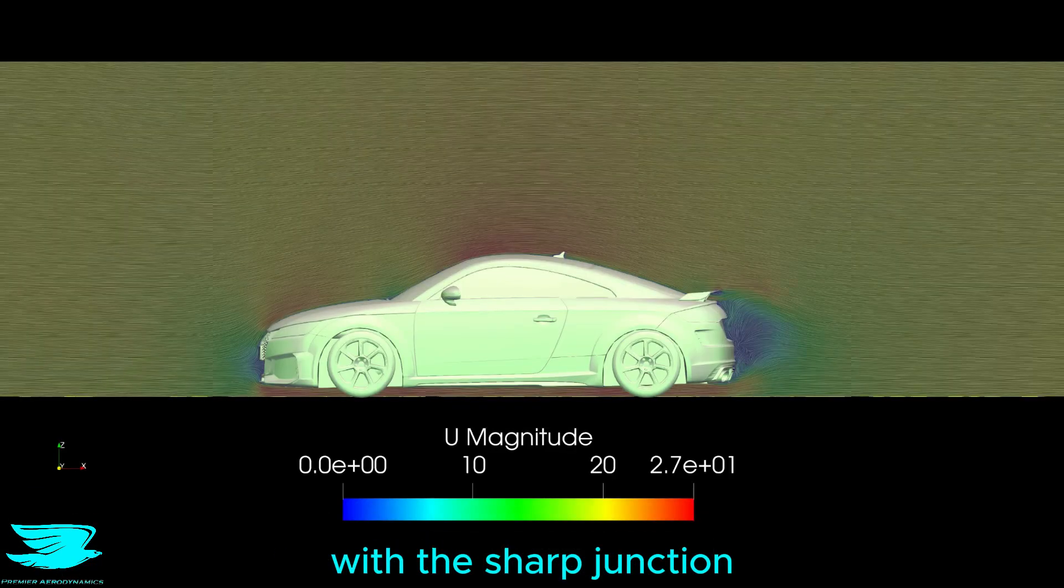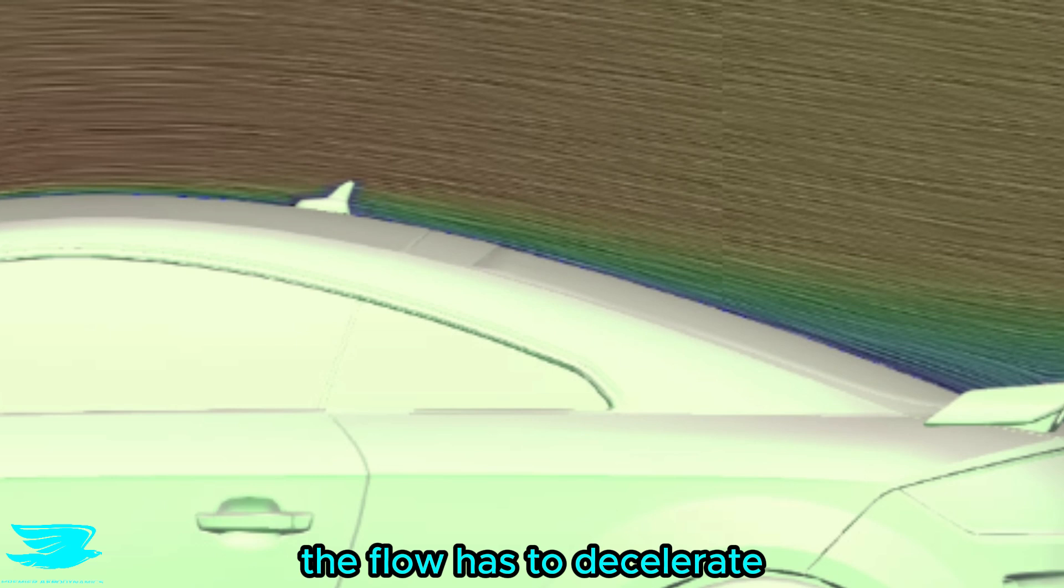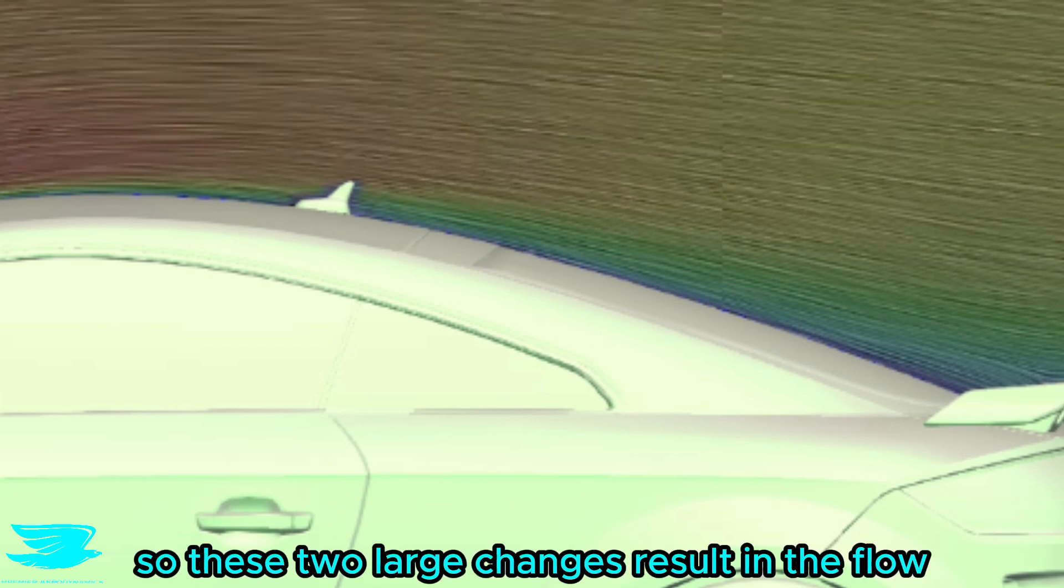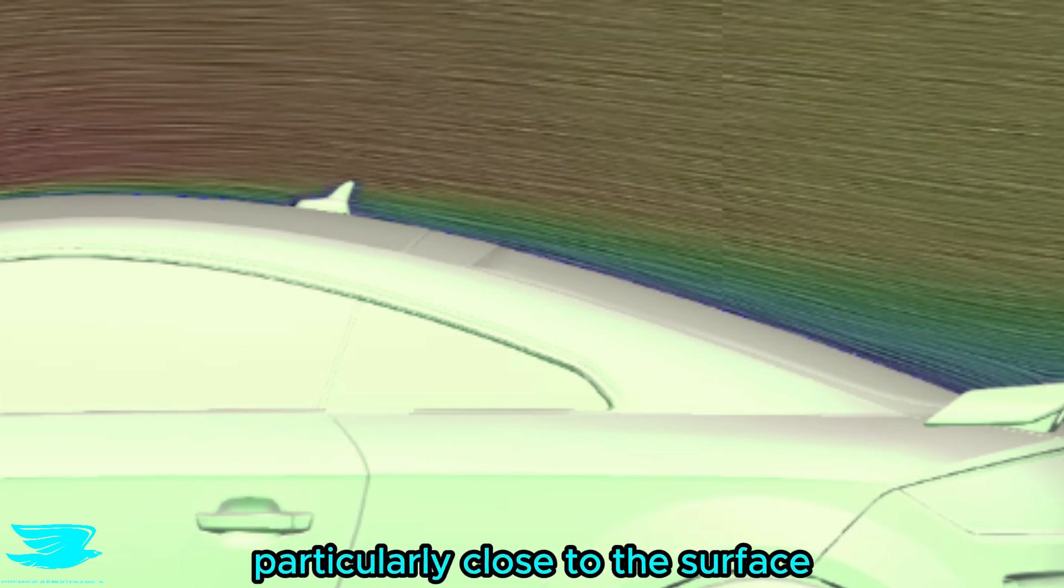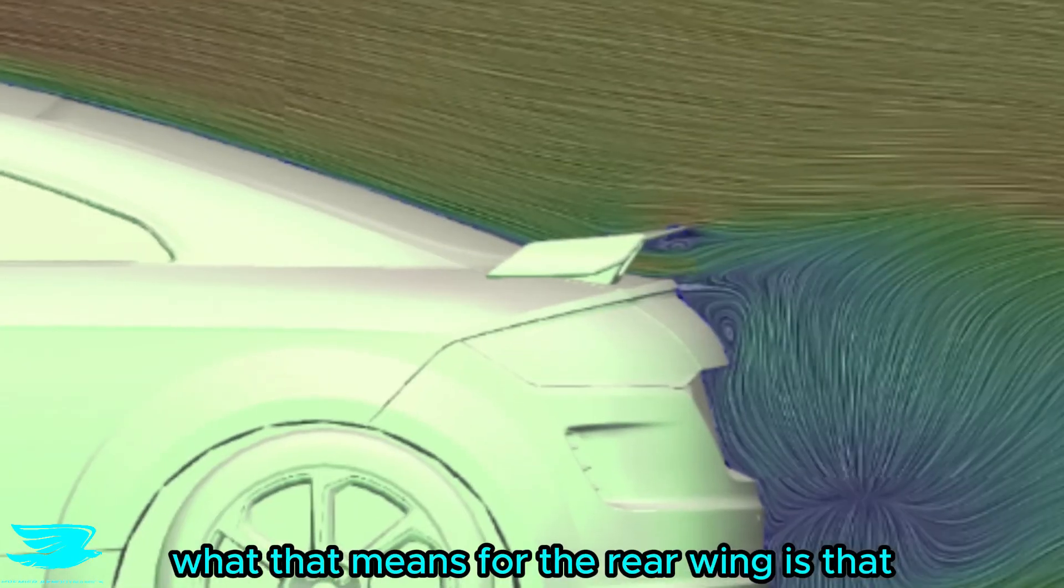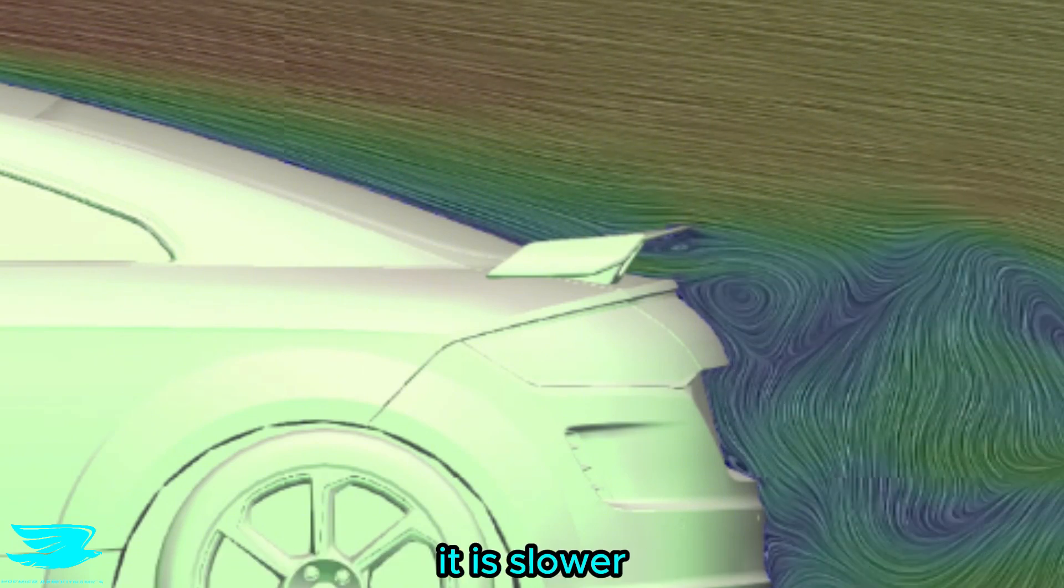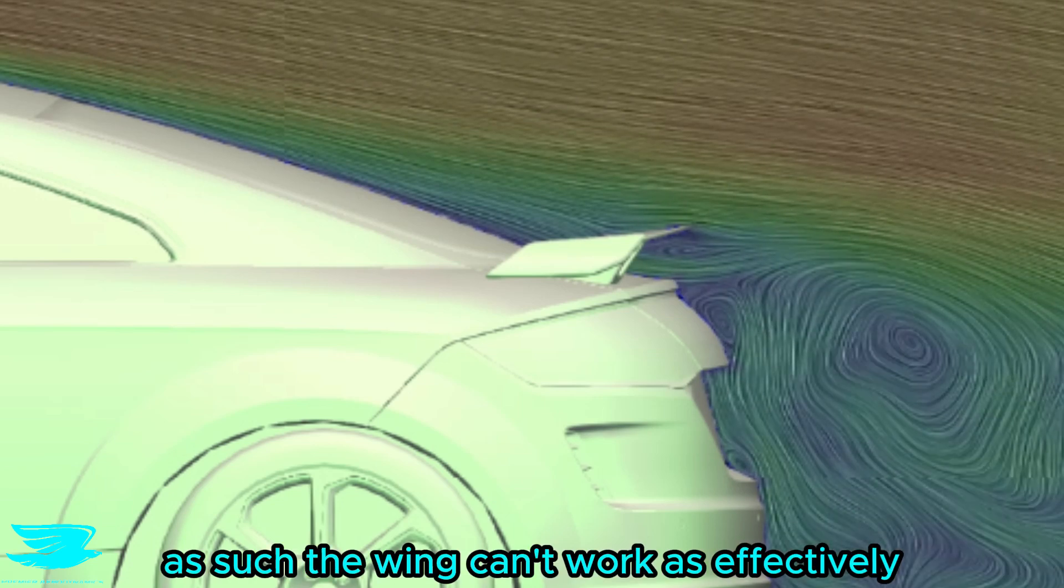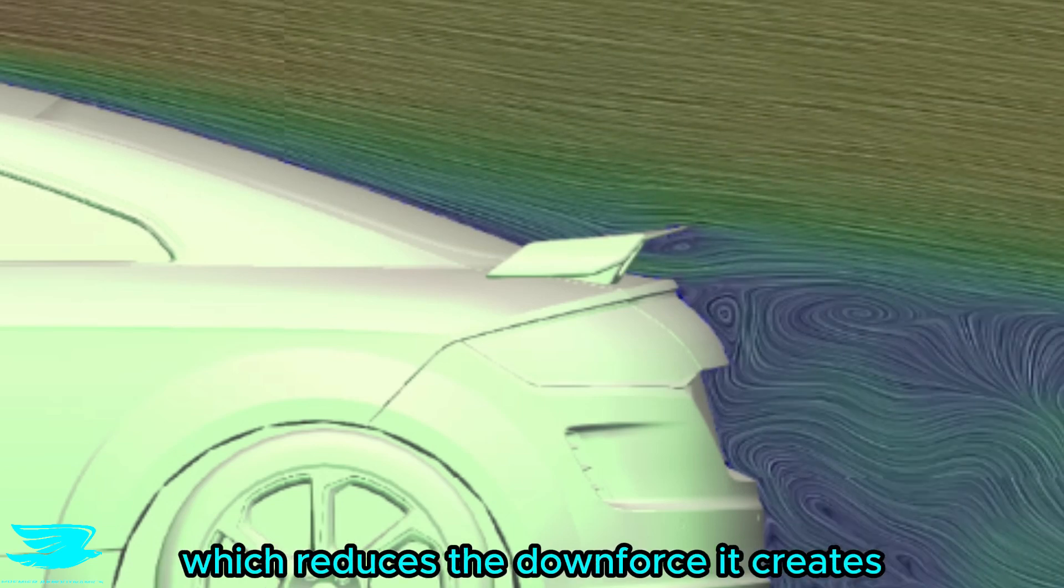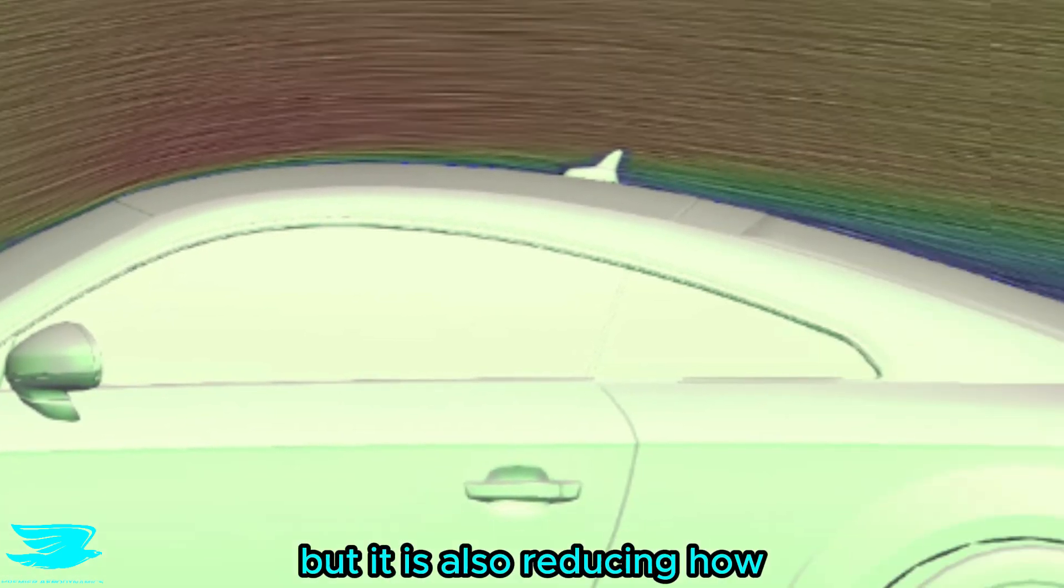There is also another problem with this sharp junction between the windshield and the roof, and that is because it accelerates the flow so much, later over the back window, the flow has to decelerate. So these two large changes result in the flow, particularly close to the surface, to have lower energy. That's because viscosity has removed some energy. What that means for the rear wing is that, as we can see, the flow hitting it is slower, the boundary layer is thicker. As such, the wing can't work as effectively, which reduces the downforce it creates. So not only is that peak on the roof increasing lift, but it is also reducing how much downforce is produced elsewhere.